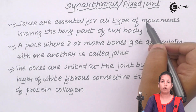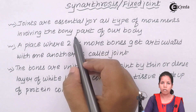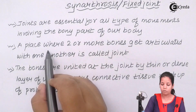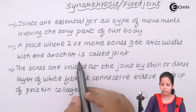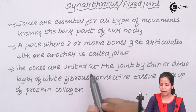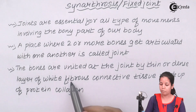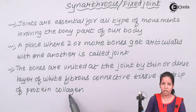If joints were not present, your wrist would not be able to move and you would not be able to write. Any bony part in your body is always associated with a joint in that region. A place where two or more bones get articulated, or simply associated with one another, is termed a joint. The bones are basically united at a joint by thin or dense layers of white fibrous connective tissue that are made up of protein collagen.